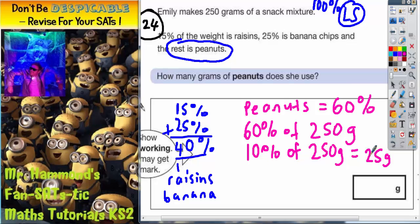But we want 60%, so if you take 10% and times that by 6, you will get your answer, you'll get 60%. So 6 times 5 is 30, put your zero in, carry your 3, 6 times 2 is 12, plus the 3 is 15. So peanuts must be 150 grams.